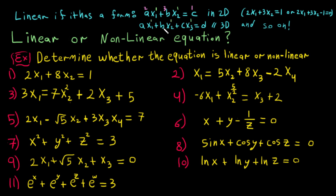There is no x1 multiplied by x2 — all of them are separate. We have multiple terms and each term has only one variable, and it has only power one. Of course this equation describes a line in its dimension.